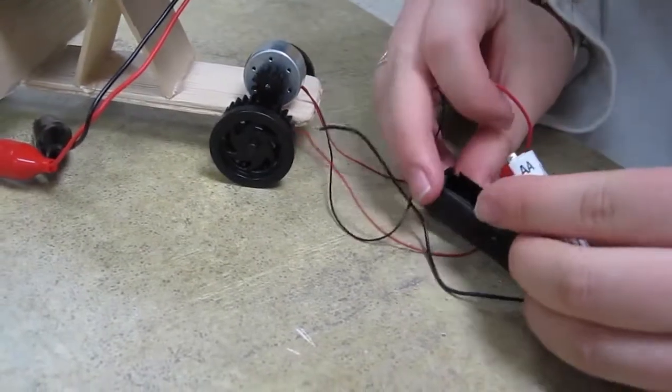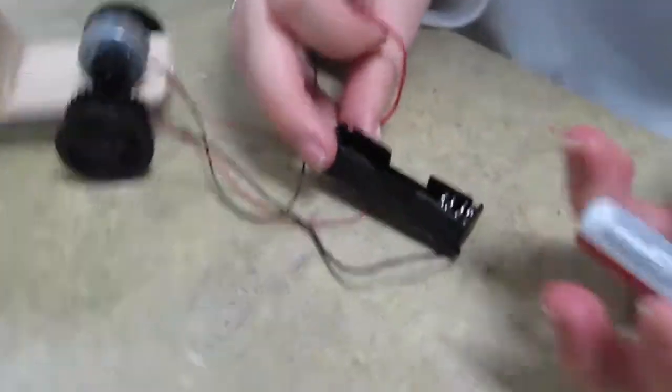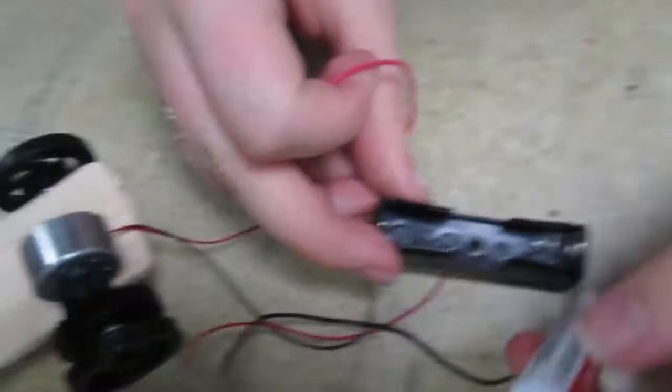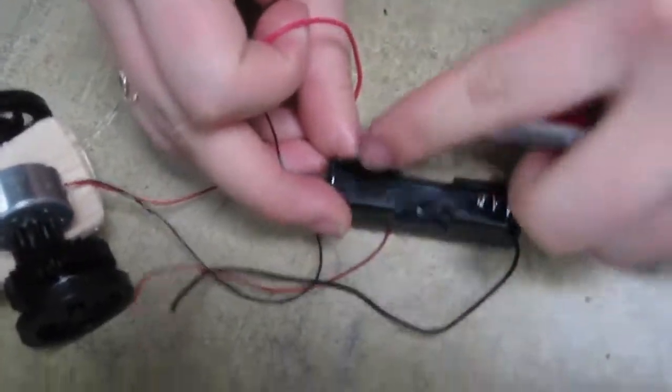You line up the plus side of the battery with the minus side. They'll have a plus side on it. And then the plus side on there.